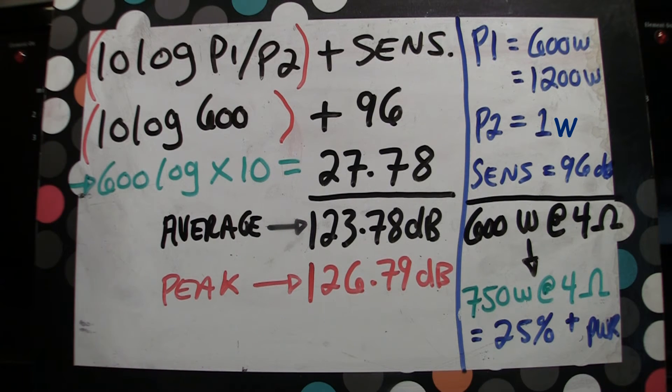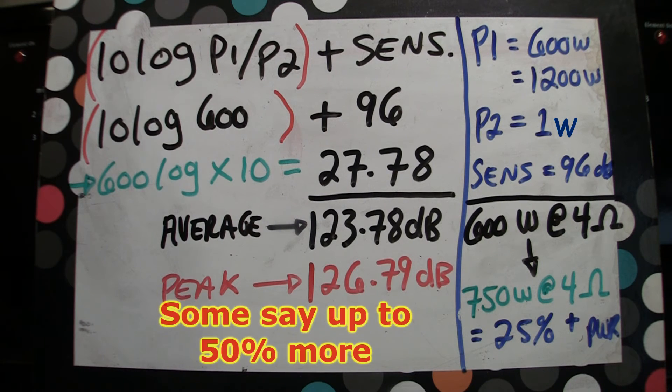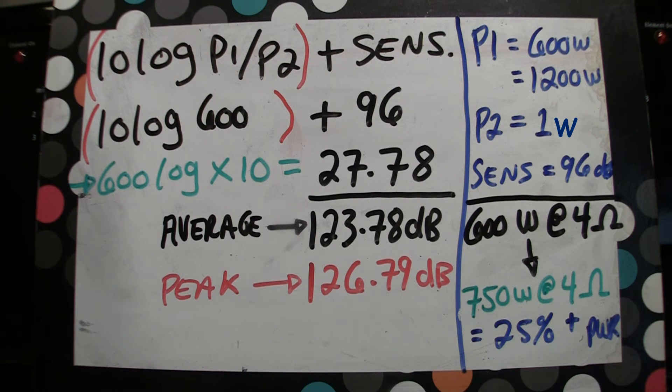So that rule of thumb is to have whatever your speaker is rated at, have the amplifier channel that's powering that speaker be equal to or 25% more. There's arguments back and forth about what's the exact figure you should go for when matching an amp to speakers. All I know is the 25% plus power worked.